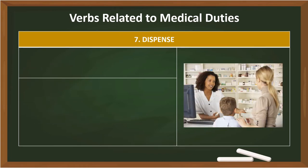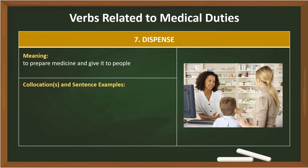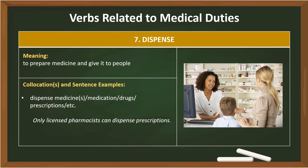7. Dispense. Meaning: to prepare medicine and give it to people. Collocations: Dispense medicines, medication, drugs, prescriptions, etc. — Only licensed pharmacists can dispense prescriptions.